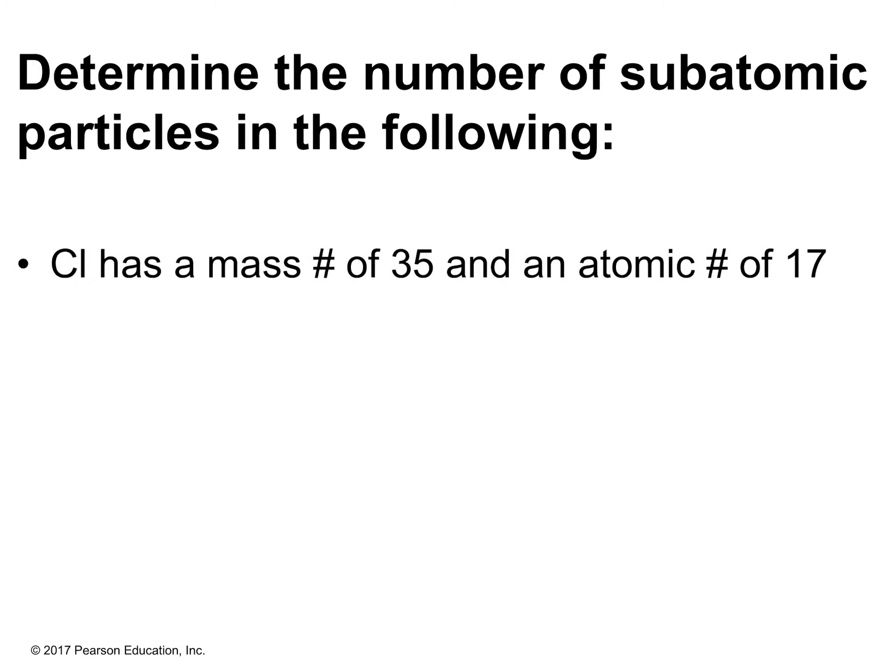Let's try chlorine. Chlorine has a mass number of 35 and an atomic number of 17. Since chlorine has an atomic number of 17, it will have 17 protons. And since it has 17 protons, it must have 17 electrons because the positives and negatives always have to cancel out. The neutrons are 35 minus 17, which gives us 18 neutrons. So there are 17 protons, 17 electrons, and 18 neutrons.